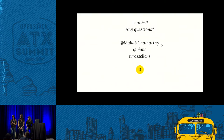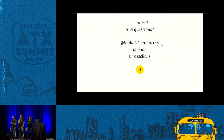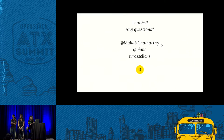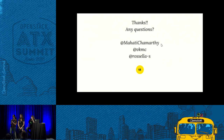Are you new to OpenStack? If you're looking for where to start, every project has a Launchpad page for tracking bugs and wish list items. Look at those and get on the IRC channel and check with the PTL or whoever is active in the channel.